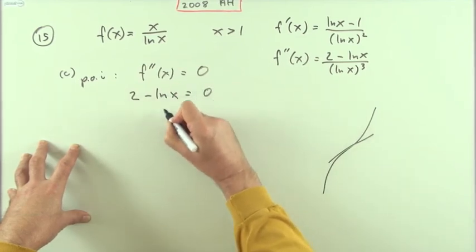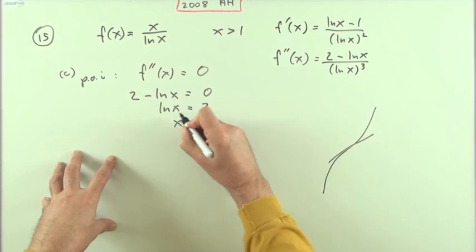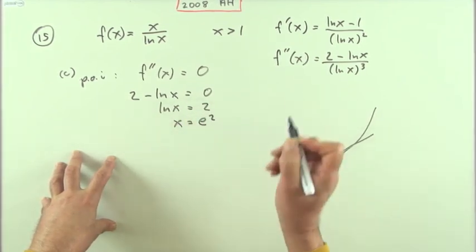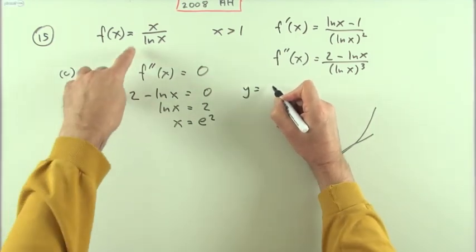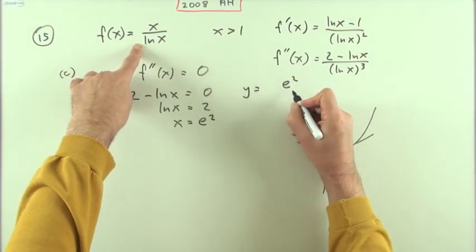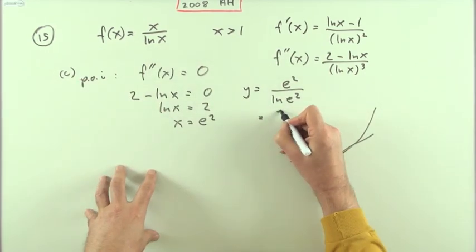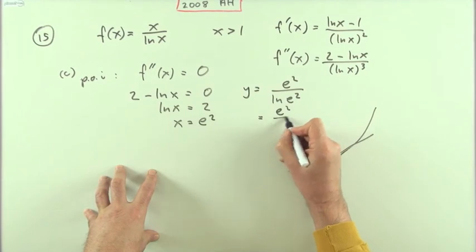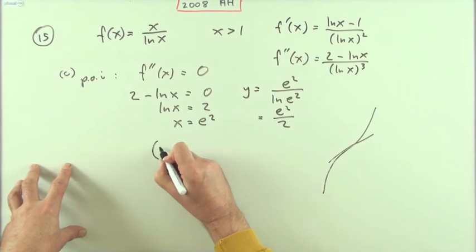Again, if I've got a rational expression, it's sufficient for the numerator of that expression to equal zero. In which case ln of x equals two, so x is going to be e to the power two, e squared. Feeding it back in, what have I got for the y coordinate? The y coordinate is going to be e squared over ln e squared, and of course ln e squared is by definition two, because that says what power of e gives e squared. So there's my point of inflection.